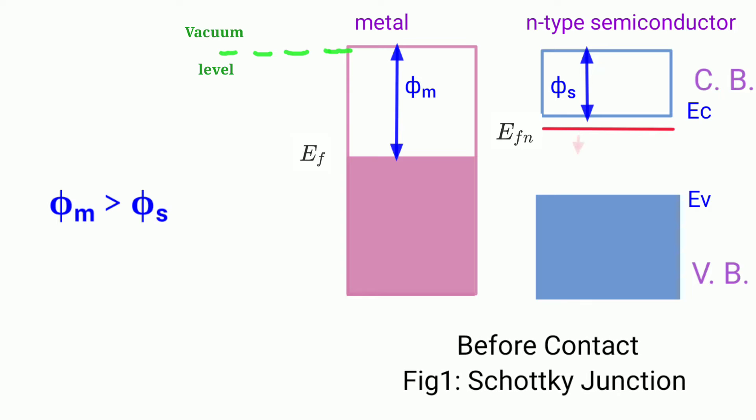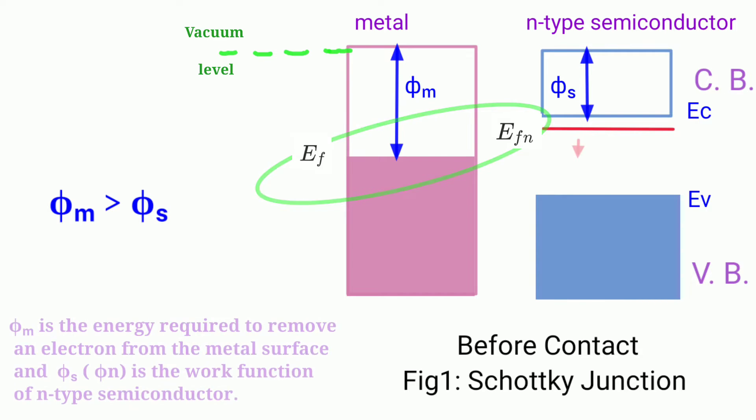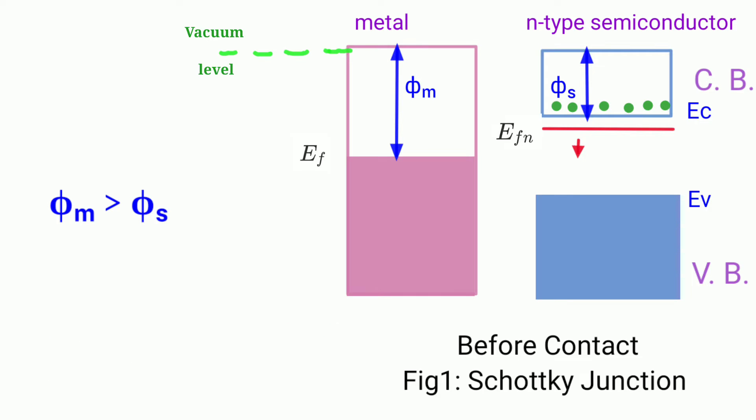When the metal-semiconductor junction is formed, the two Fermi levels must line up at equilibrium. Here Phi m is the energy required to remove an electron from the metal surface and Phi n is the work function of N-type semiconductor. Phi n is also written as Phi s, where s stands for semiconductor. Thus the work function of the semiconductor is smaller than that of the metal. It means the electrons can move from semiconductor side to the metal side, forming a contact potential.